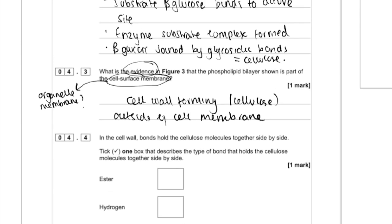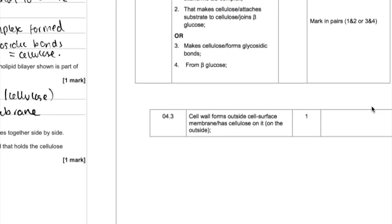And let's have a look at the mark scheme for that. There we go, the cell wall forms outside the cell surface membrane or has cellulose on it.